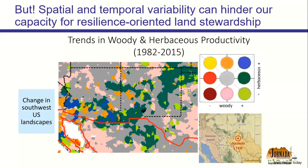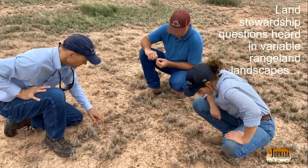These approaches are promising and show results, but the spatial and temporal variability of rangelands can really hinder our capacity for land stewardship. We've just heard about how things have shifted over the past decades, and we see every season and every week how much things change when you live on an arid rangeland. In my travels around the west, speaking with researchers, ranchers, and other stakeholders, a lot of questions come up about how to do land stewardship for resilience in these variable landscapes.